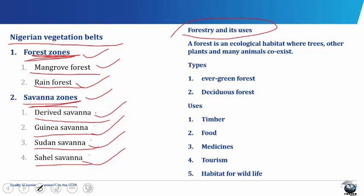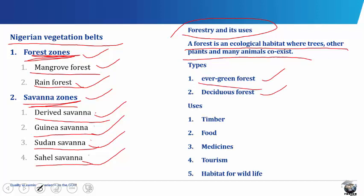Forestry and its uses: A forest is an ecological habitat where trees, other plants and many animals coexist. We have different types of forests which include the evergreen forest and the deciduous forest. The evergreen forest occurs mainly around the floodplains of large rivers. By the activities of man, the original high forest has been reduced to secondary forests made up of evergreen water-tolerant plants of three different types: the upper layer consists of very tall scattered trees of about 40 to 50 meters high which do not form any continuous canopy; the middle layer is made up of trees of between 16 to 40 meters high, also scattered and not forming a continuous canopy; and the lower tree layer consists of trees of between 10 to 16 meters high.